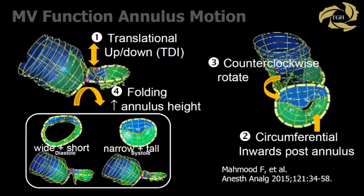If we break down the models, there are actually four motions to the mitral annulus — we don't see that in 2D or on the on-fast 3D view. There's an up-and-down motion with the ventricle; a circumferential inward motion; a counterclockwise rotation because that's how the ventricle moves; and a concept called folding, which reduces annular and leaflet stress. The bottom line is the mitral valve is specifically designed to be wide and short during diastole — because it wants to be open and fill the ventricle — and tall and narrow during systole, for better leaflet apposition and less regurgitation.